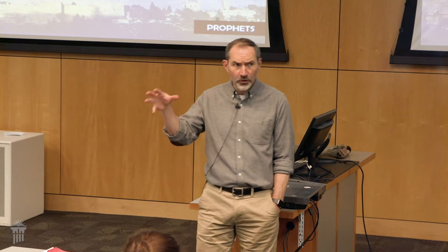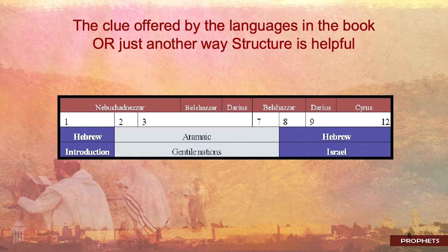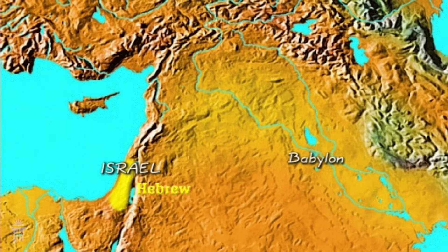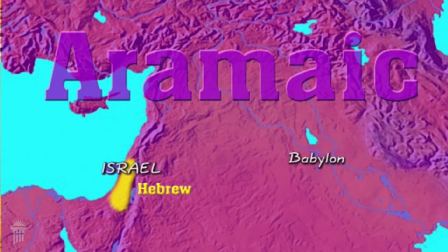Looking at the structure of Daniel, the most interesting part is the languages used — for the very first time in all of the Old Testament we have a language other than Hebrew. Chapter 1 is in Hebrew, then chapters 2 to 7 are in Aramaic, and chapters 8 to 12 revert back to Hebrew. The people who speak Hebrew are in a small area, but Aramaic is spoken everywhere else — it is the lingua franca, the trade language. So in chapters 2 to 7, God is speaking the language that Babylonians understand — not only literally but figuratively in terms of power.